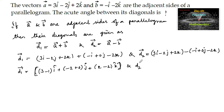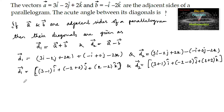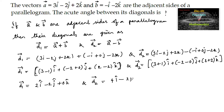D2 vector is given by 3 minus of minus 2, minus 2 of j, and 2 minus of minus 2 of k cap. So we can write vector d1 is equal to 2i minus 2j plus 0k cap and vector d2 is equal to 4i minus 2j plus 4k cap.